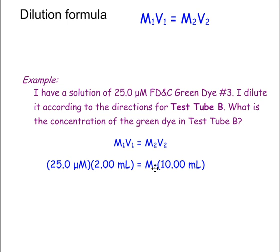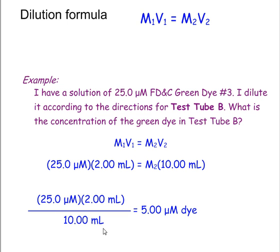Now I just have one variable, so now I can do the mathematics to solve for the variable. So I'll rearrange my equation a little bit and I will solve for M2, which happens to be five micromolar. So in my concentration I can either put 5.00 micromolar, or even better because this is what I'm going to need to enter into my lab quest, 0.0000500 M.